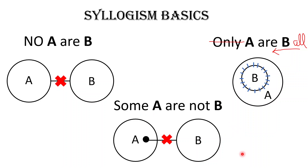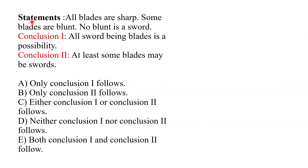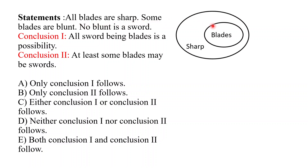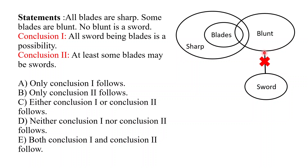Now let's look at Question 1 for better understanding. Statements: All blades are sharp; Some blades are blunt; No blunt is a sword. These map to: All A are B, Some A are B, and No A are B — the same basics I just taught. Drawing this: all blades are contained in sharp; some blades overlap with blunt; and blunt and sword are completely separate with no overlap.